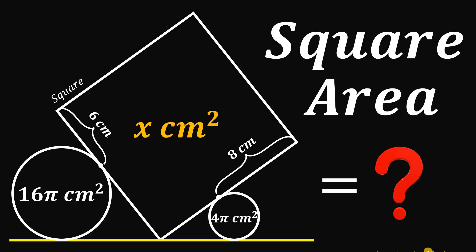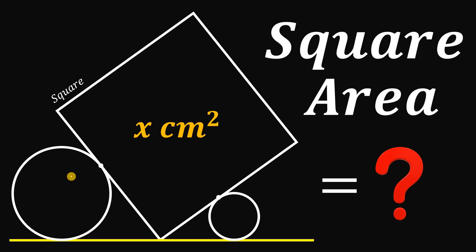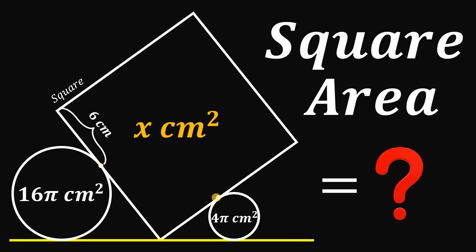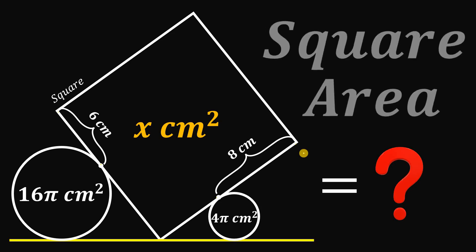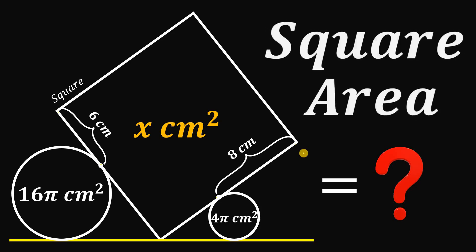For today's video we will answer a geometry challenge given by one of our followers. Given the squares and circle, the area of the big circle is 16π square centimeters, the area of the small circle is 4π square centimeters, the measure from one point of the square to another is 6 centimeters, and from one point to another is 8 centimeters. Our goal is to find the area of the square. You can pause this video if you want to give this problem a try.